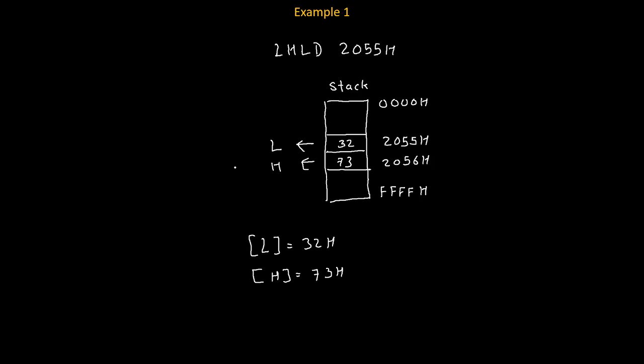Now we will talk about addressing mode of this instruction. In this instruction, LHLD is opcode and 2055 is operand. And this 2055 is address. Therefore, its addressing mode will become direct addressing mode. Whenever operand of any instruction is address, its addressing mode becomes direct addressing mode.